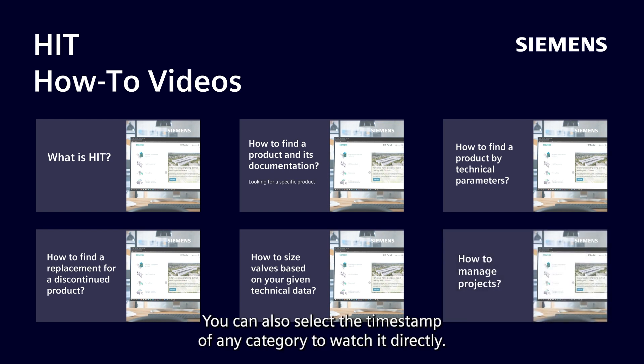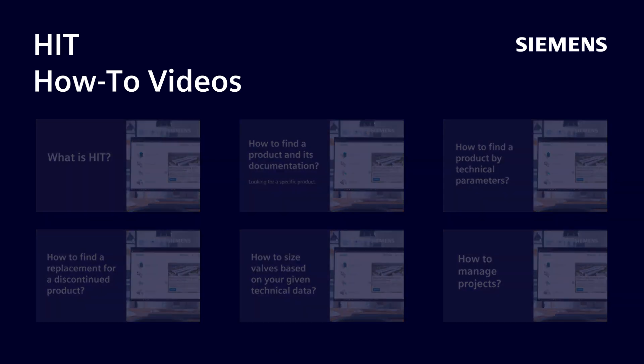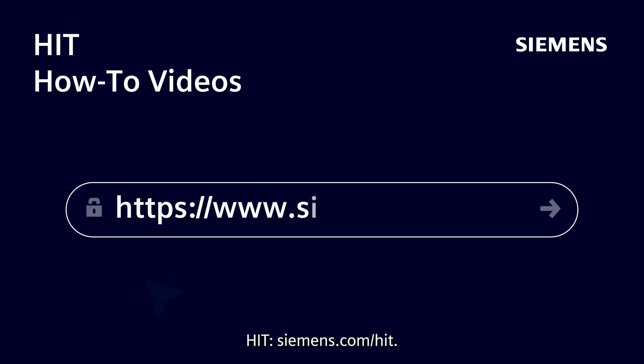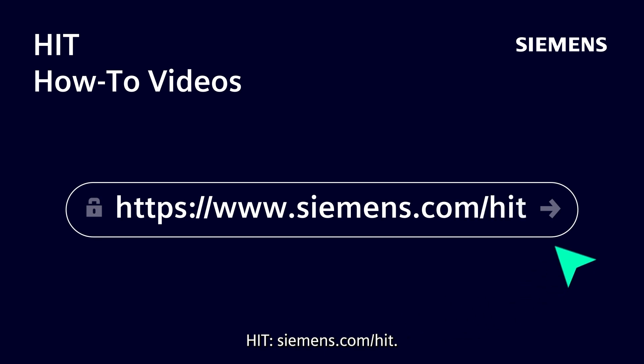You can also select the timestamp of any category to watch it directly. Type the following address to access HIT: siemens.com/HIT.